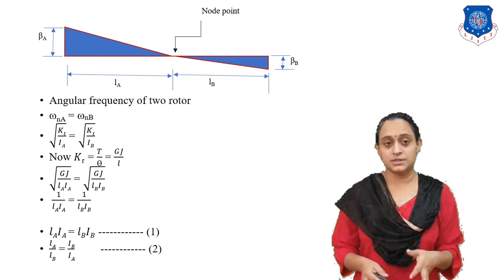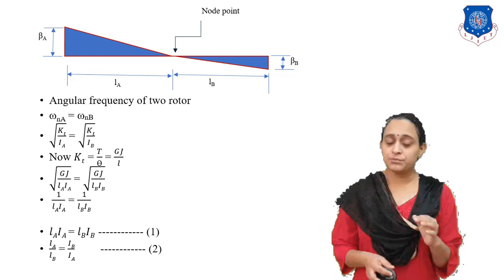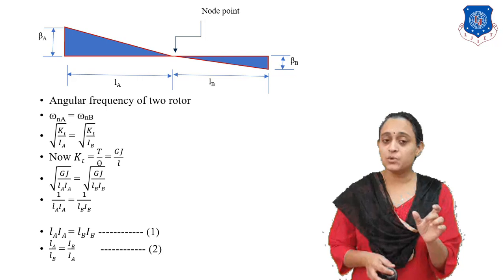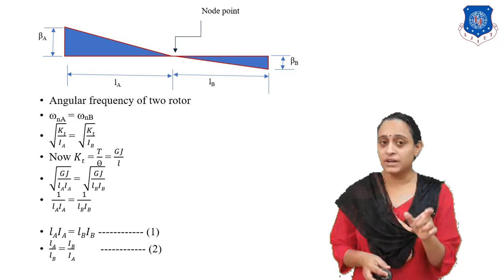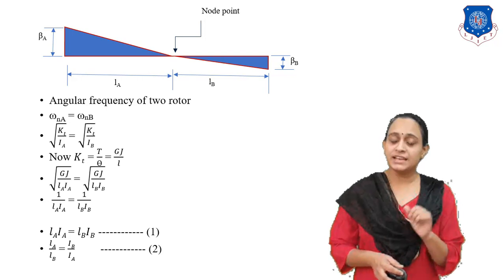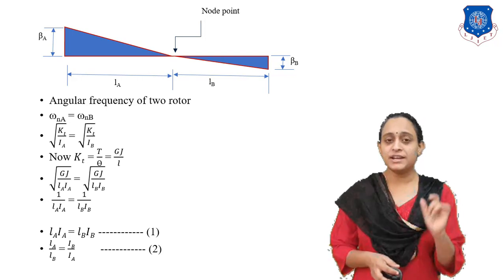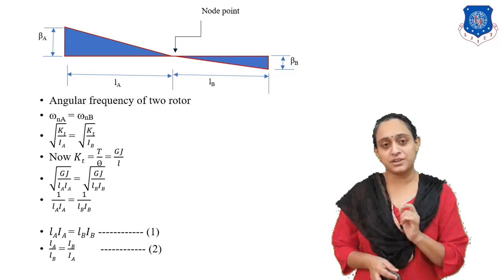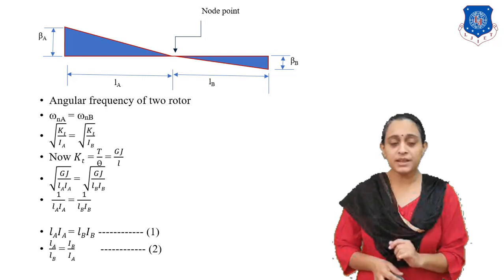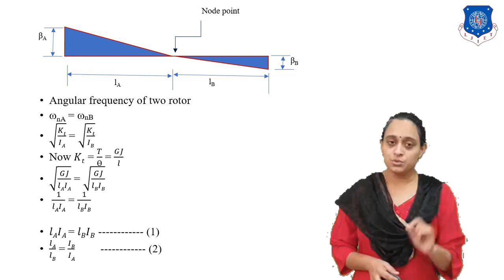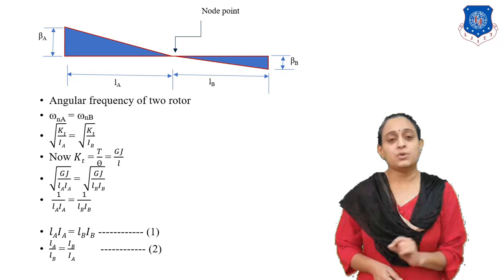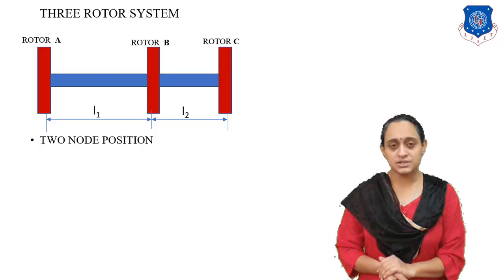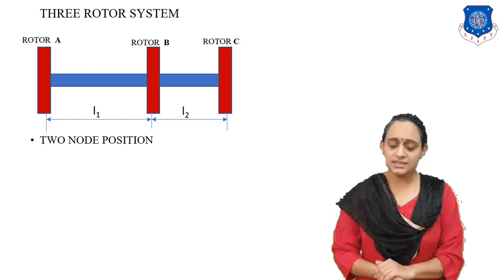Students, this equation is very very important because we need it to solve the total numerical of the system. If we consider this equation number 1, we can easily find out the values of natural frequency. You have to note it down. Now let us start our three rotor system.